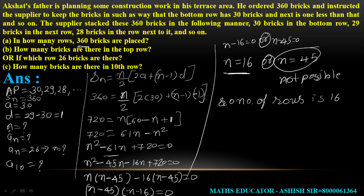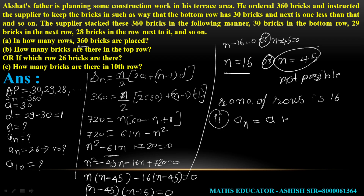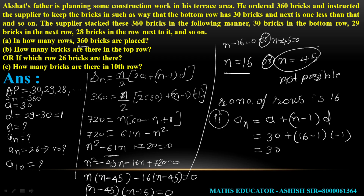How many bricks are there in the top row? The top row is the 16th row. a16 = 30 + (16−1)×(−1) = 30 − 15 = 15. So there are 15 bricks in the top row.